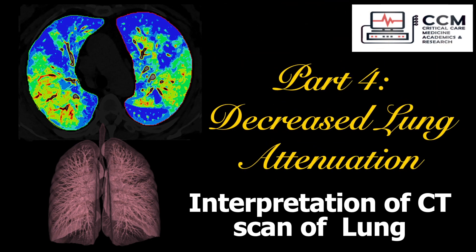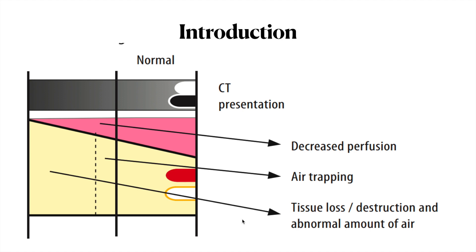Decreased lung attenuation. In a normal CT scan, the attenuation of the lung depends on the perfusion, the air that is present, and the soft tissue. When there is decreased attenuation, it indicates that there is more air getting trapped, or the perfusion has reduced, or there is some soft tissue loss. It is either one of these conditions which has to be present for a patient to have decreased attenuation of the lung.